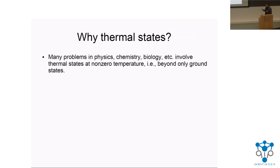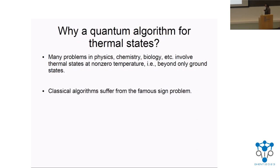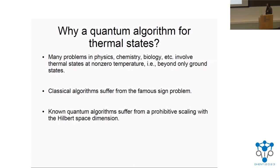Just a little bit of motivation. Many problems in physics, chemistry and biology involve preparing quantum thermal states that go beyond only ground states. We know that classical algorithms suffer from the famous sign problem, and non-quantum algorithms suffer from a prohibitive scaling with the Hilbert space dimension. We will see what this means, and in fact this is the part that we will try to improve in this talk.